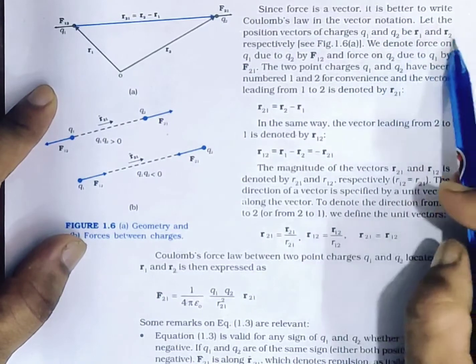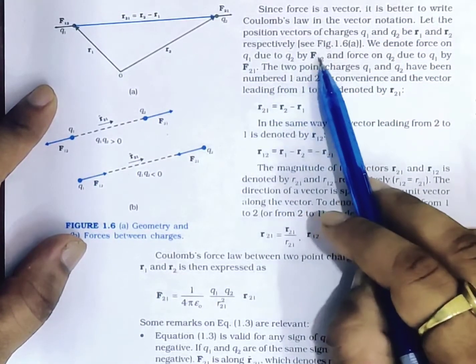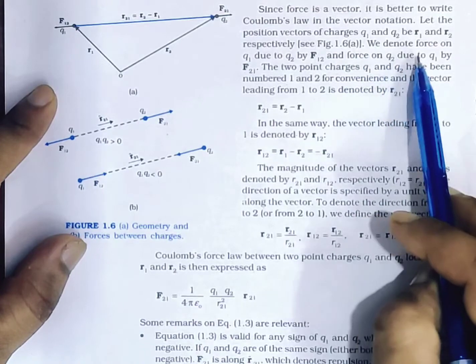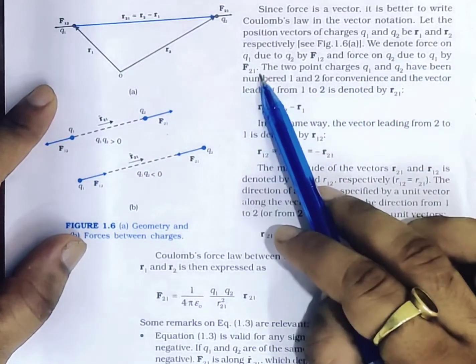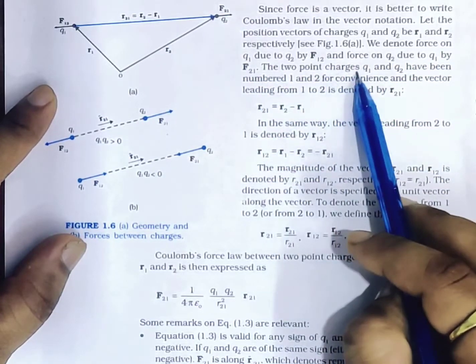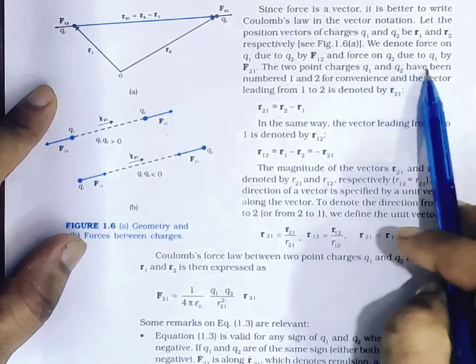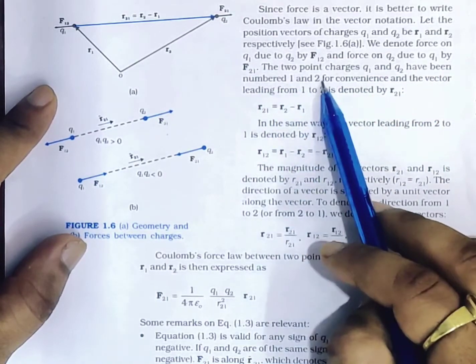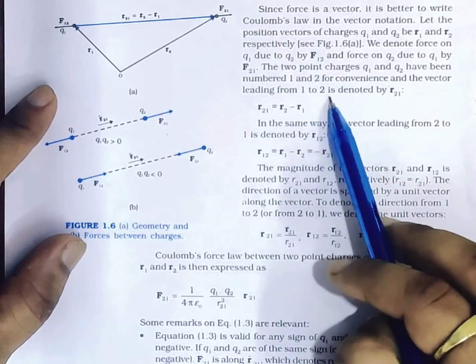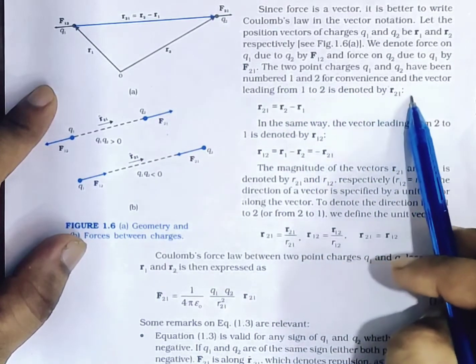We denote force on Q1 due to Q2 by F12, and force on Q2 due to Q1 by F21. The two point charges Q1 and Q2 have been numbered 1 and 2 for convenience, and the vector leading from 1 to 2 is denoted by R21.